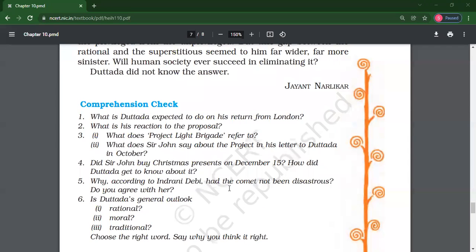According to Indrani Devi had the comet not been disastrous? Because, according to her, it was a blessing of, you can say, his guru, her guruji and the Yajnas performed. So that is why no harm. But now, do you agree with her? For this, you need to explain. What is your opinion? Because her opinion was completely based on superstitions. Correct, Akshima.